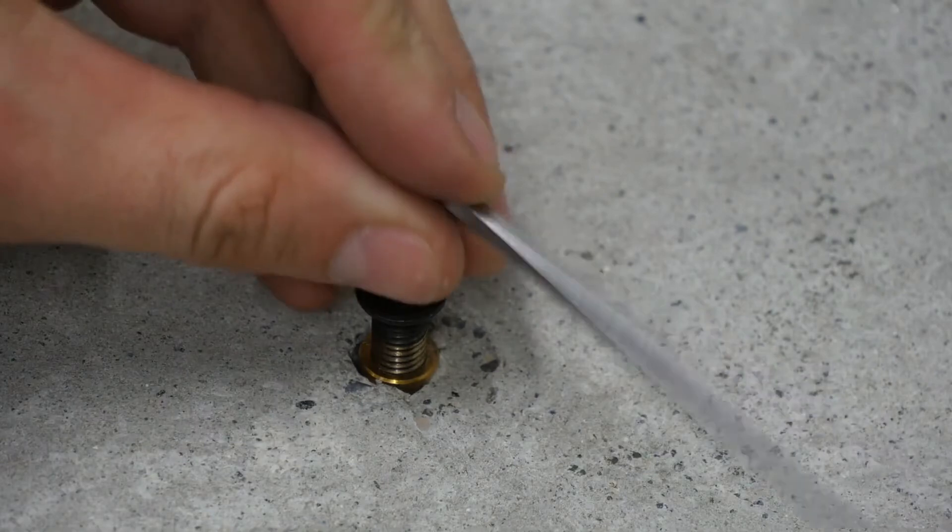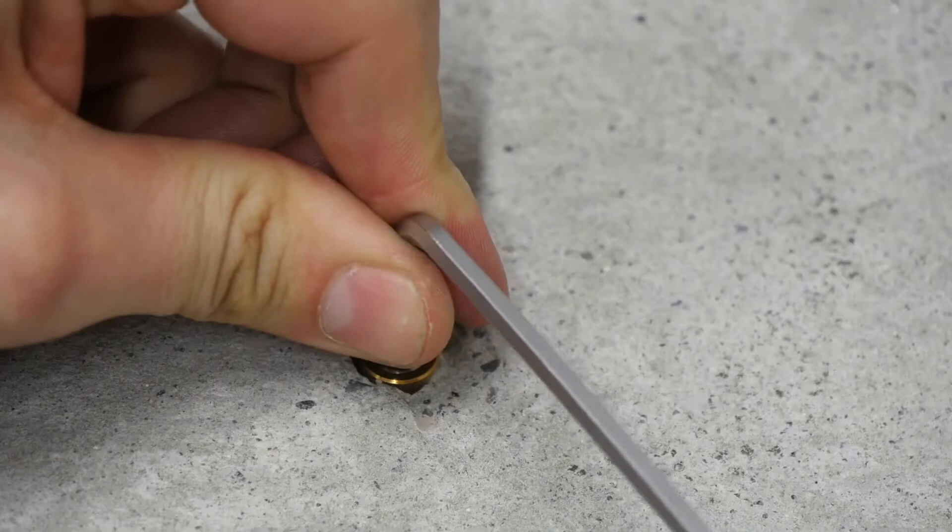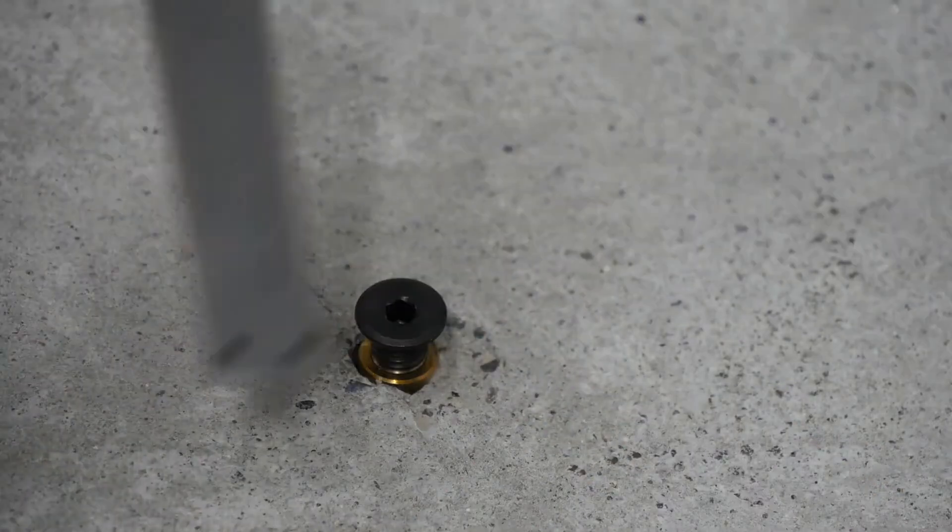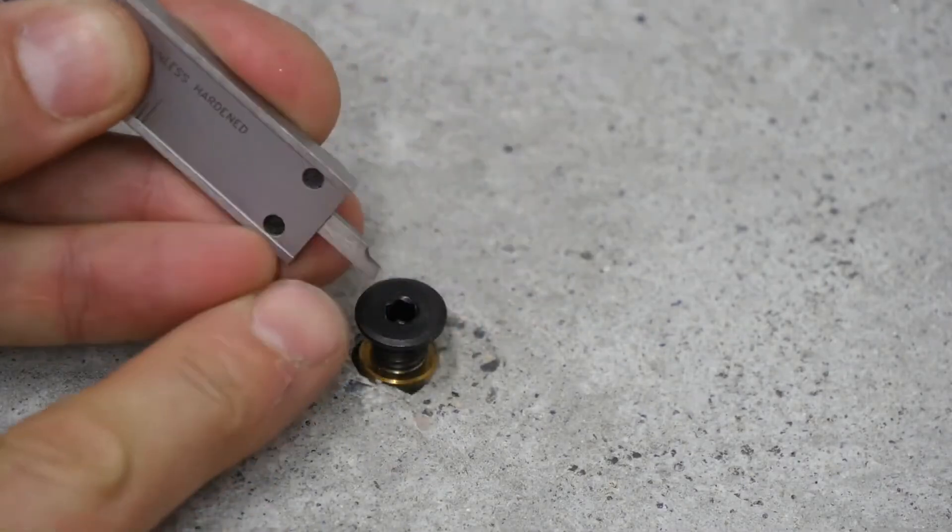After the hole is drilled, the anchor should not protrude above the mounting surface. The M8 screw is used to expand and secure the anchor. Tighten down the screw until the screw protrudes not lower than one centimeter above the mounting surface.